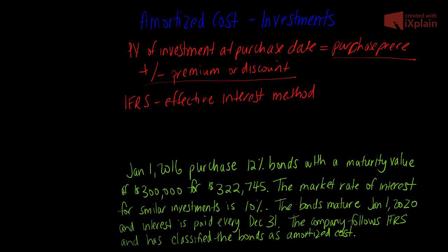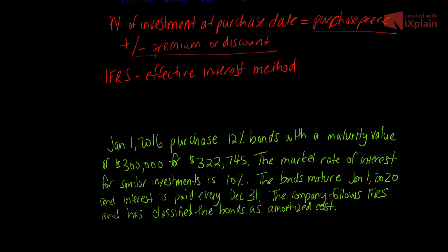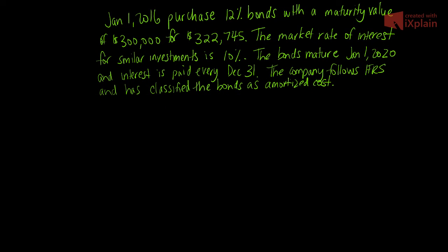Let's take a look at an example of how to account for an amortized cost investment. On January 1st, 2016, you purchase 12 bonds with a maturity value of $300,000 and you pay $322,745. The market rate of interest for similar investments is 10%. The bonds mature January 1st, 2020, and interest is paid every December 31st. The company follows IFRS and has classified the bonds as amortized cost. Our requirement is to record all required journal entries between January 1st, 2016 and the maturity of the bond.